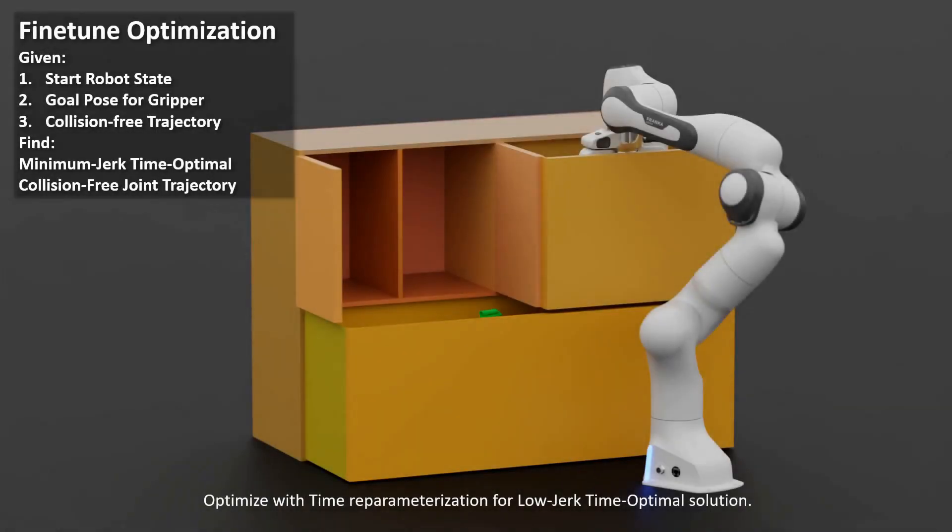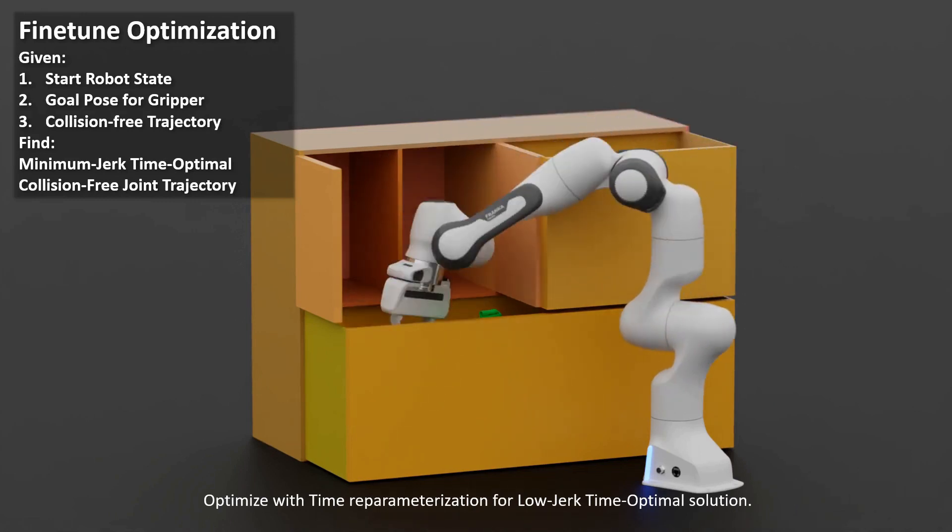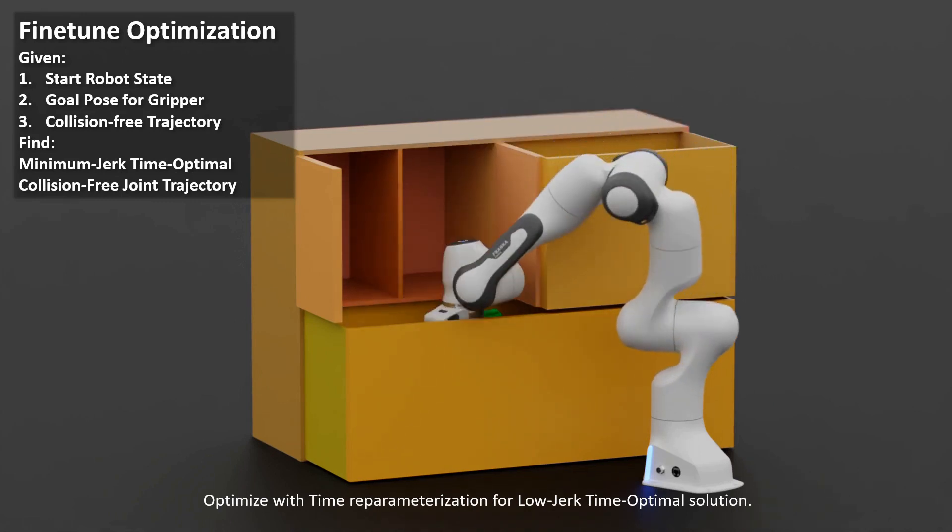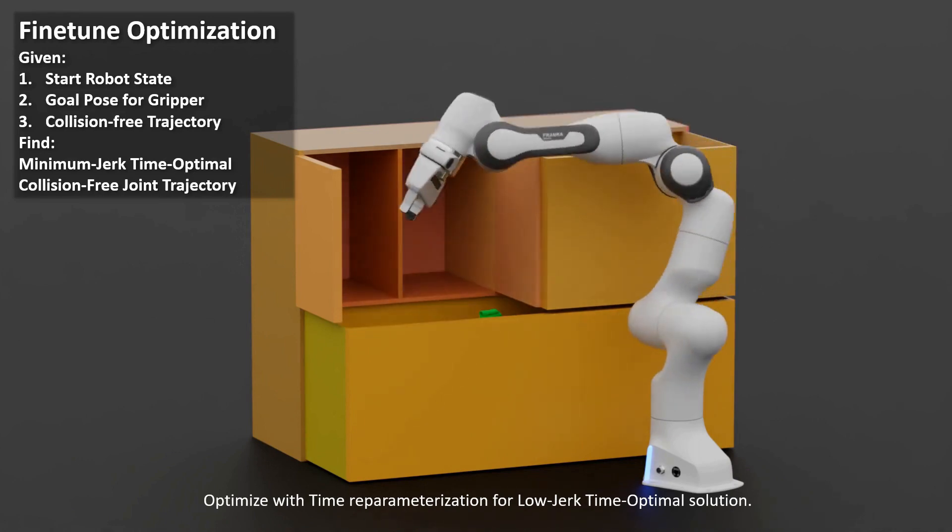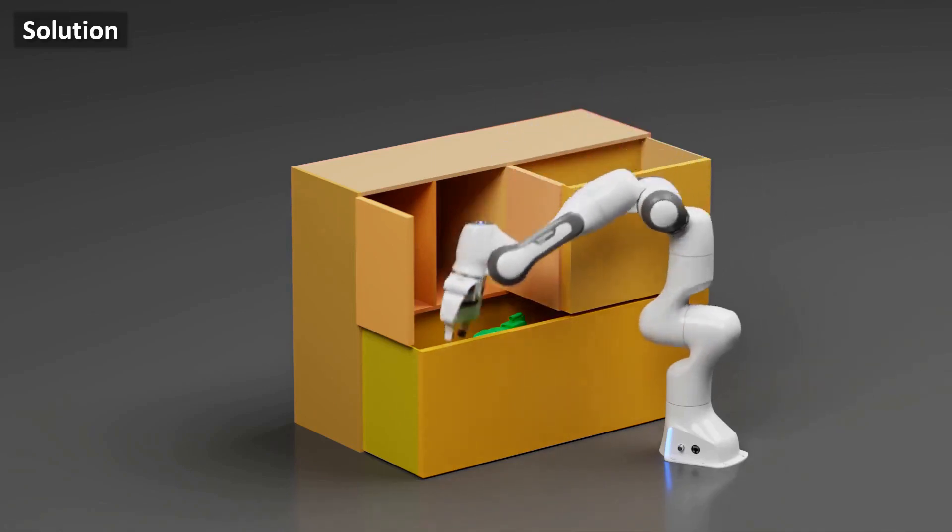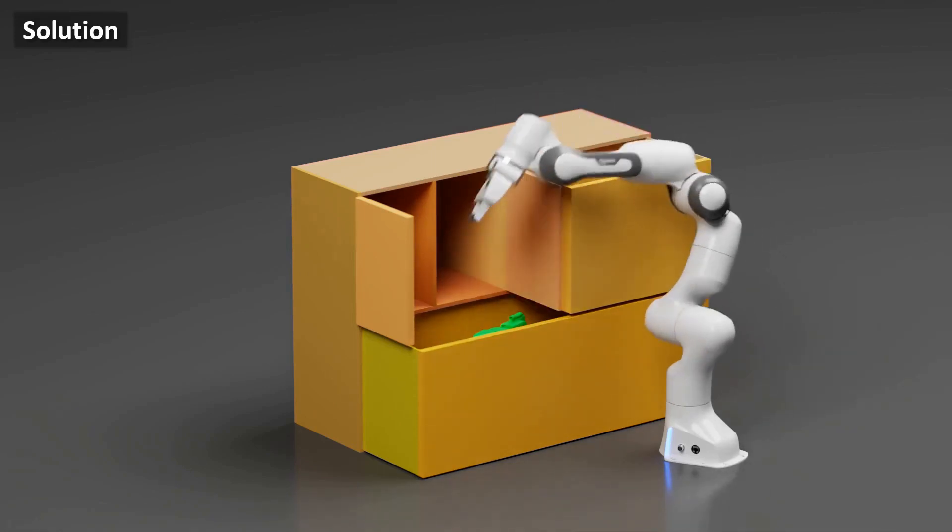Once a collision-free path is obtained, a minimum jerk optimization is performed on the best solution. This step also reduces the time it takes for the robot to reach the goal by optimizing with a smaller estimated DT between time steps. After these steps, we get a collision-free minimum jerk trajectory for the robot to reach the goal pose.